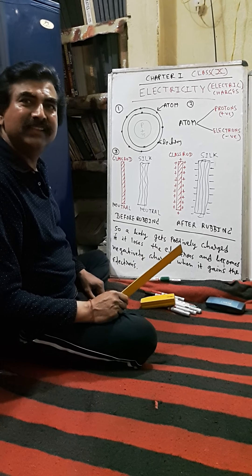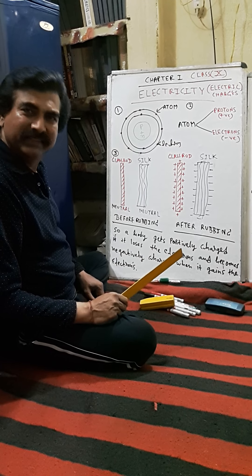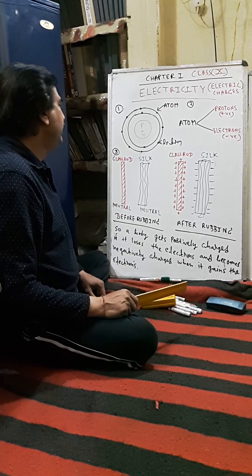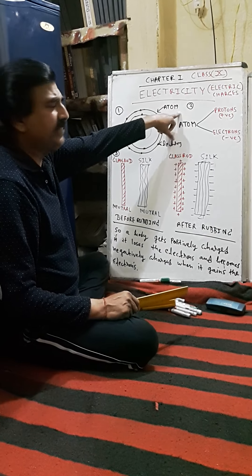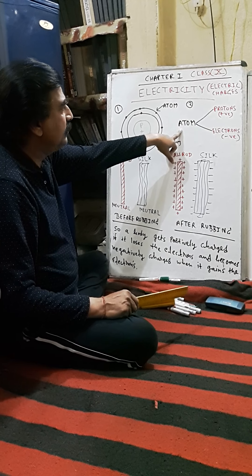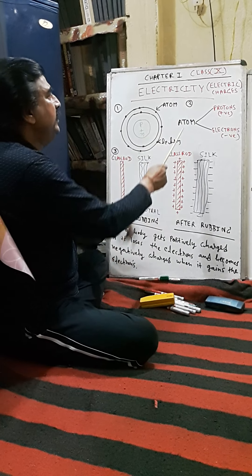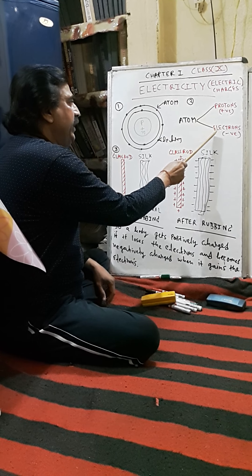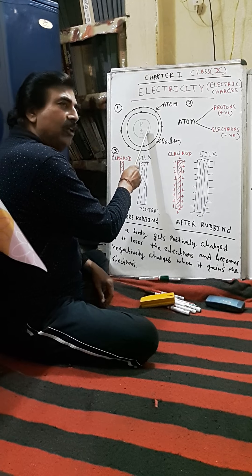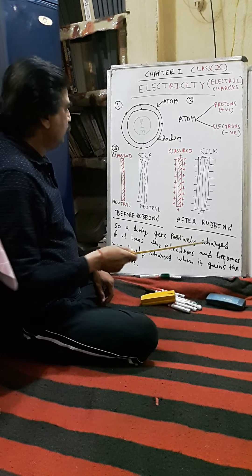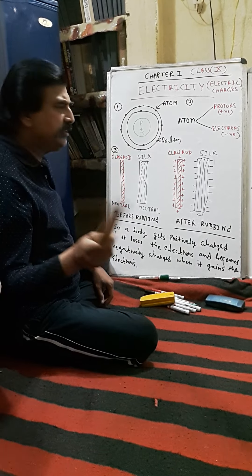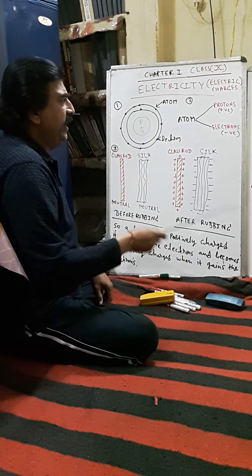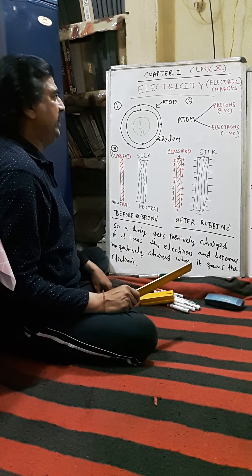They cancel out each other's respective charges, which is why the atom is wholly taken as neutral. In the atom there are two charges: protons and electrons. Neutron is also there but it has no charge, so we are not discussing the neutron. Proton is positively charged and electron is negatively charged.